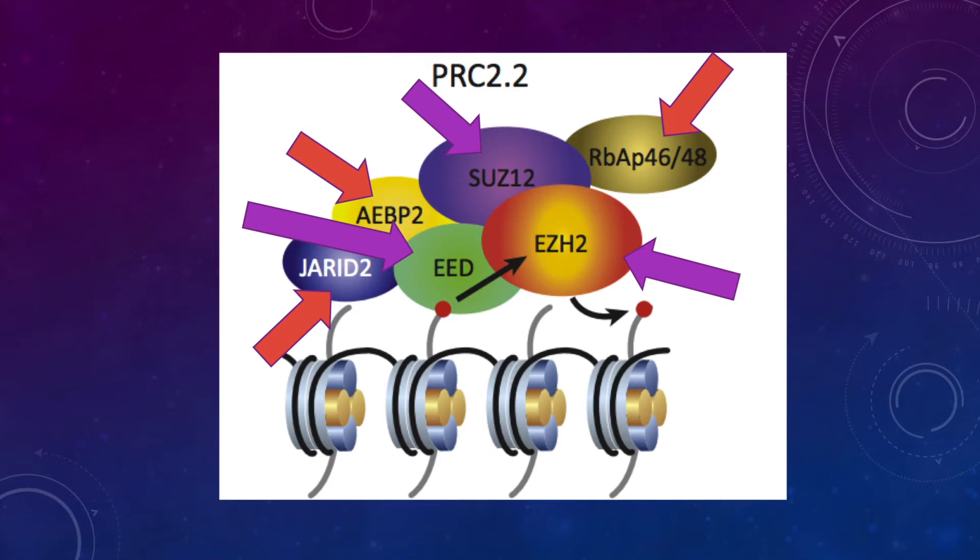PRC2 is a class II methyltransferase because of the EZH2 complex, which is the subunit with catalytic activity. What makes it a class II is its SET domain. The SET domain is a highly evolutionarily conserved protein domain that carries out methyltransferase activity.